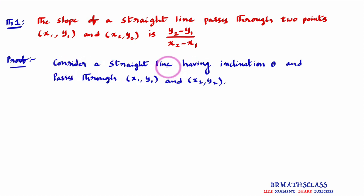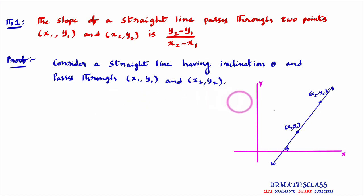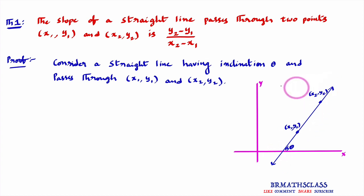First we will consider a straight line which has inclination theta and passes through the points x1, y1 and x2, y2. I will draw a diagram to understand this more clearly. Observe here: I considered a straight line whose inclination is theta and passes through two points x1, y1 and x2, y2. Now I need to prove that the slope of this straight line is y2 minus y1 divided by x2 minus x1.